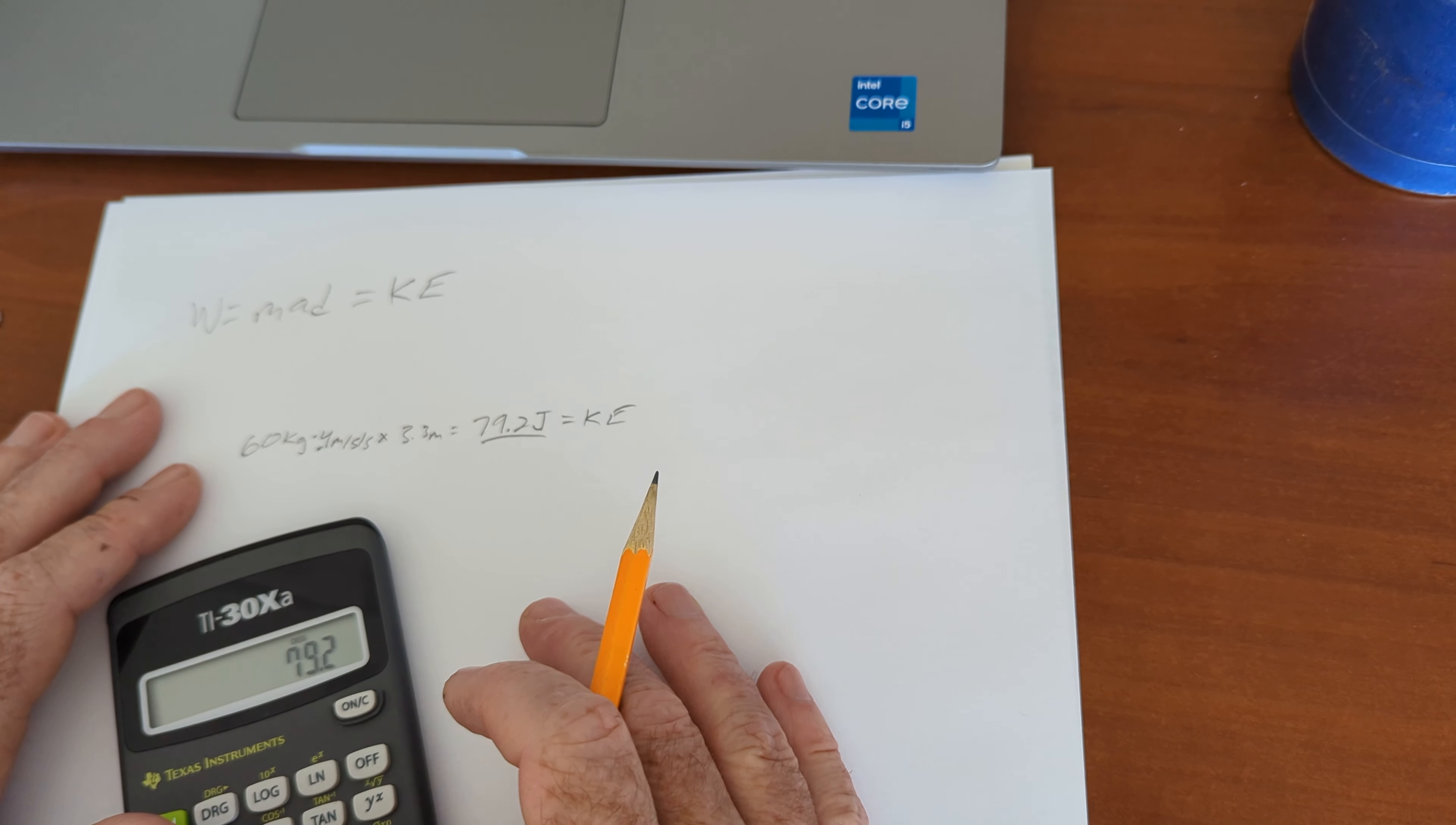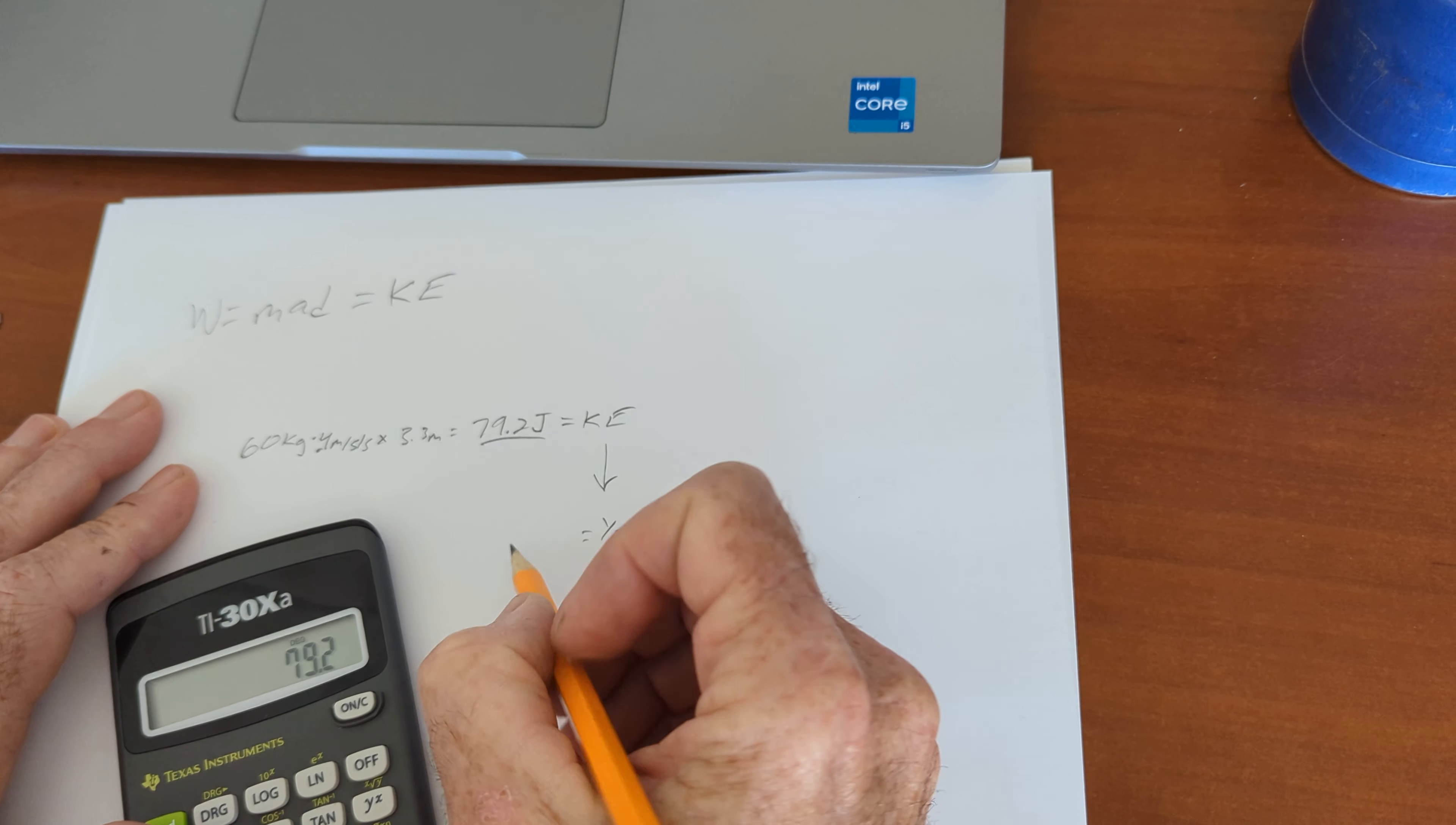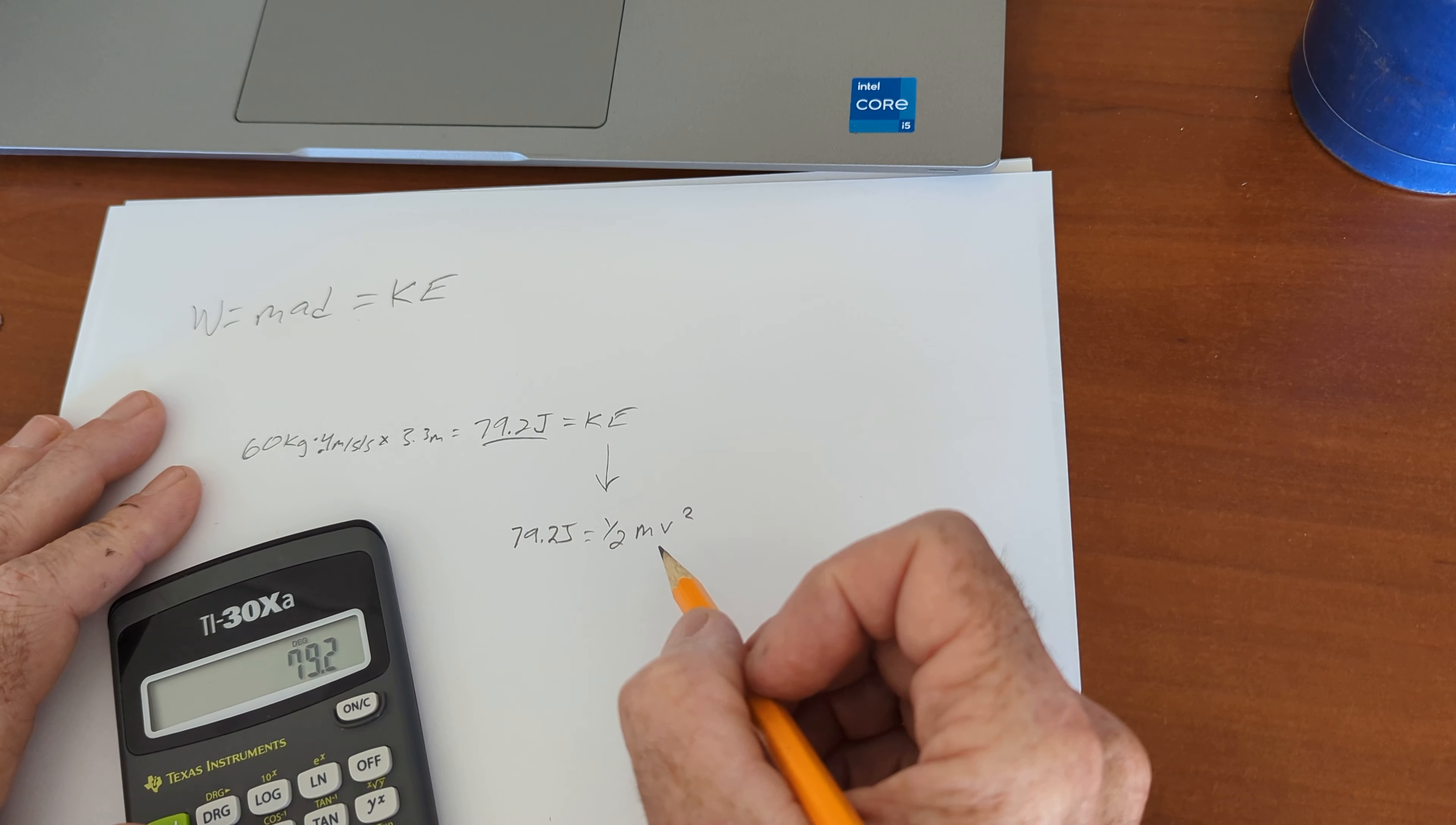Number four says, what is the final velocity? So now we're going to use the kinetic energy formula. 1 half mv squared, 79.2 joules is the kinetic energy. 1 half m, the mass of this thing is 60.